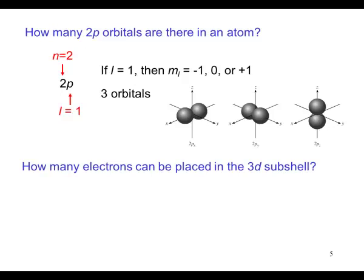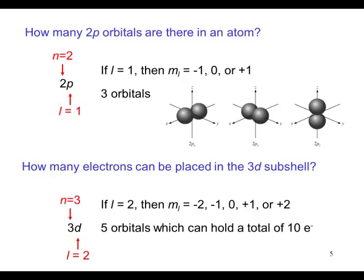How many electrons can be placed in the 3d subshell? In this case, n equals three, l equals two. If l equals two, then m sub l can be equal to minus two, minus one, zero, plus one, or plus two. Five orbitals, which can hold a total of ten electrons. Remember, each orbital can hold two electrons.